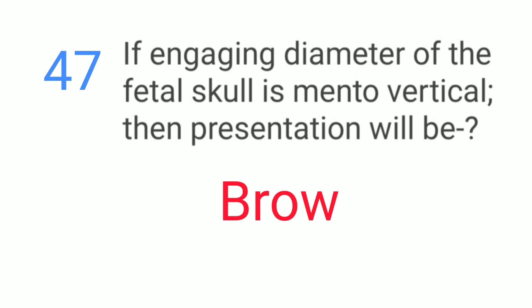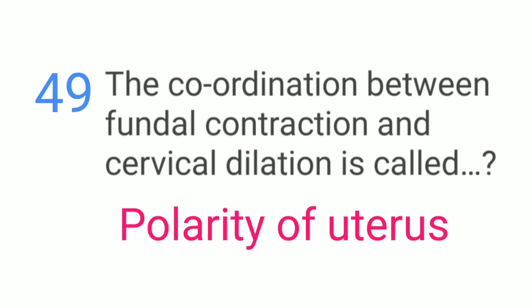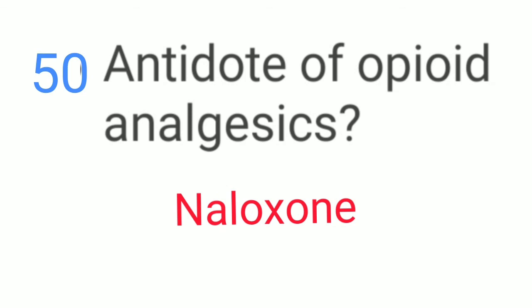Under the influence of FSH, Graafian follicles develop. If the engaging diameter of the fetal skull is mento-vertical, the presentation will be brow presentation. In gynecoid pelvis, the brim shape is round. The coordination between uterine contractions and cervical dilatation is called polarity of the uterus. The antidote of opioid analgesics is naloxone.